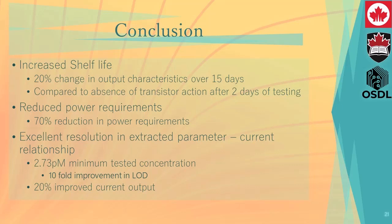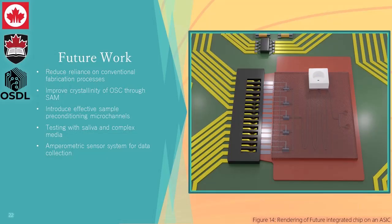We observed excellent resolution in the inverse relationship between current and concentration, and in the extracted parameter and concentration relationship. We also reduced our minimum limit of detection to 2.73 picomolar, which is a tenfold improvement in the limit of detection, with a 20% improved current output for those same concentrations. Our findings in this paper were promising and are the first step on the road to creating a point-of-care cortisol sensing device.